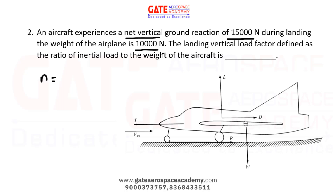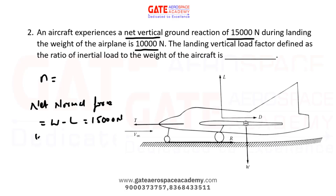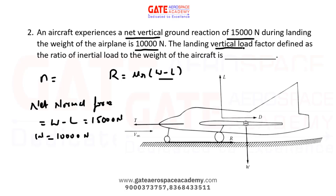The net vertical ground reaction is 15,000 Newtons. We know that the net normal force equals W minus L. So the net normal force W − L = 15,000 N, and the weight W = 10,000 N. In the landing run, the resistant force is μ_R × (W − L), but here there is no need to find R. They are directly asking for the landing vertical load factor, and no other data is given, so we consider the net normal force as the initial load.